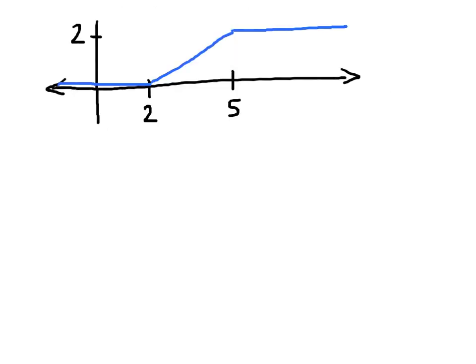Here we have what we might call a ramp function. The blue line represents something — think of it as a switch or current — that is turned off up until time 2. From time 2 to 5, the function increases up to the value 2. And after time 5, it stays constant at the value 2. We'd like to create a piecewise defined function for this.